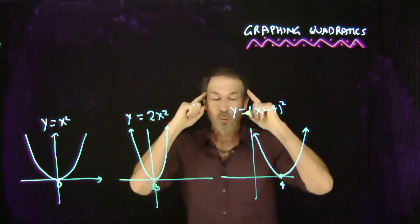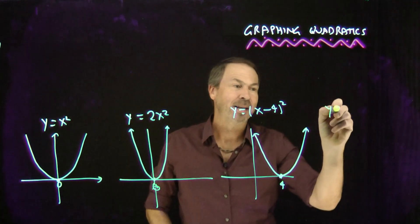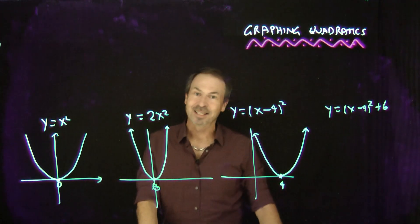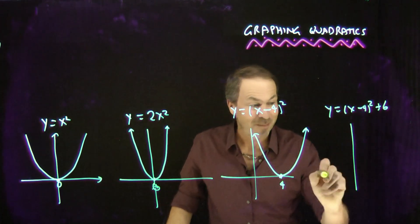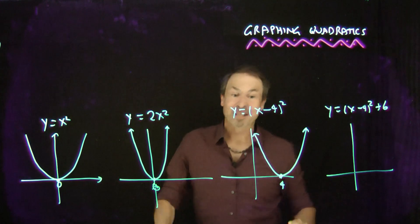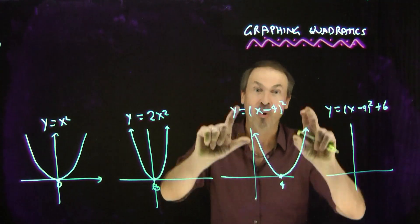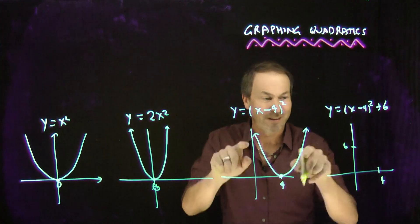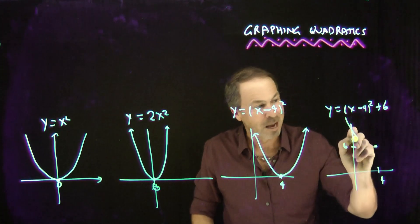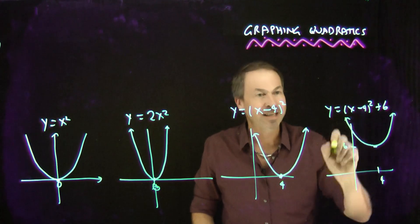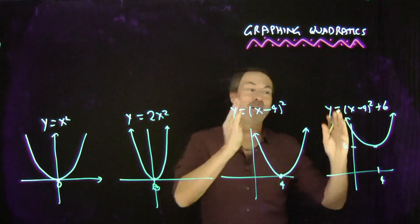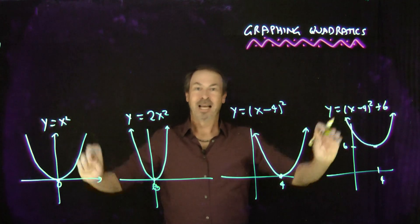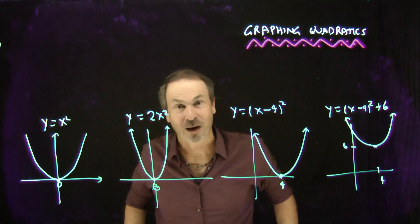Then we started doing things like: let's bump everything up by 6, making every data point 6 higher. In which case it's going to be the same graph, but now all the data values are 6 higher. So it's the same symmetrical U-shaped graph, but everything has been bumped up 6 units. Every graph we've been drawing so far has been a symmetrical U-shaped graph.